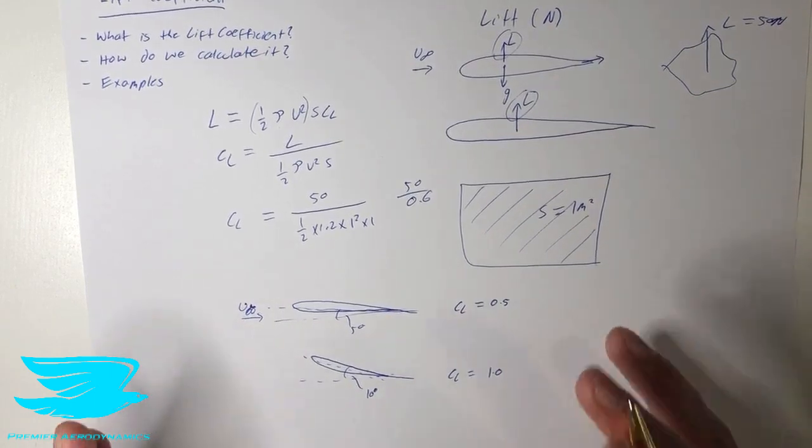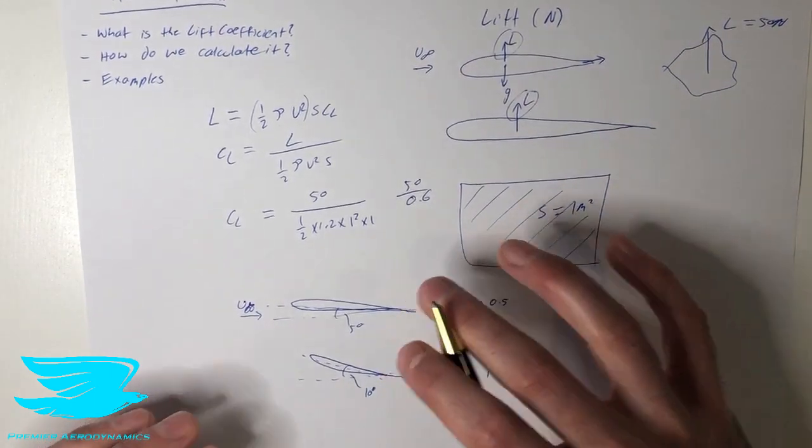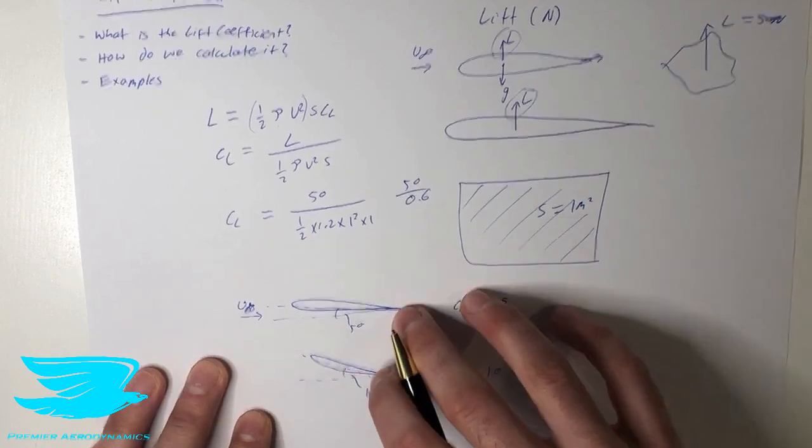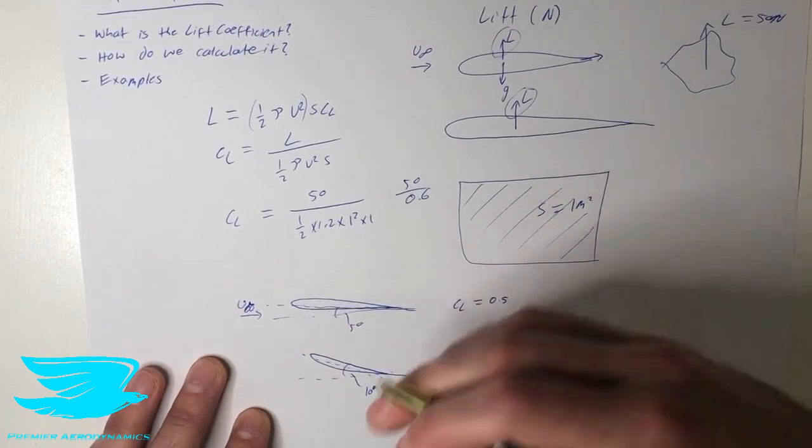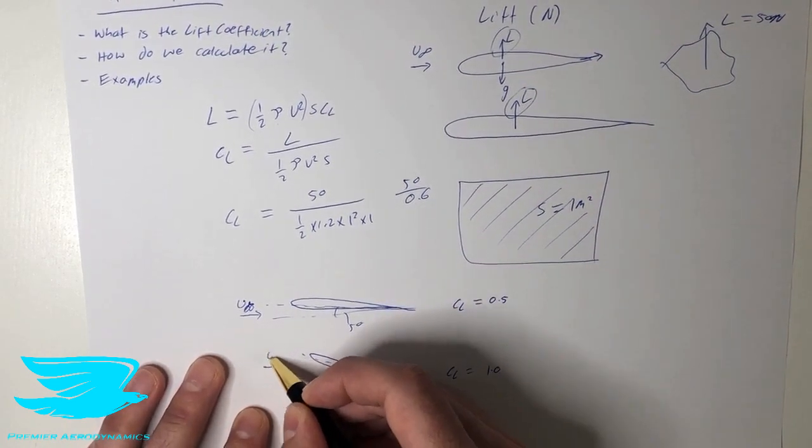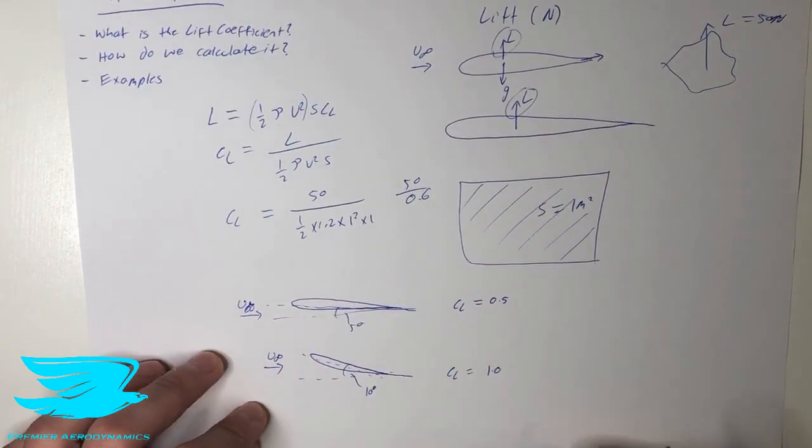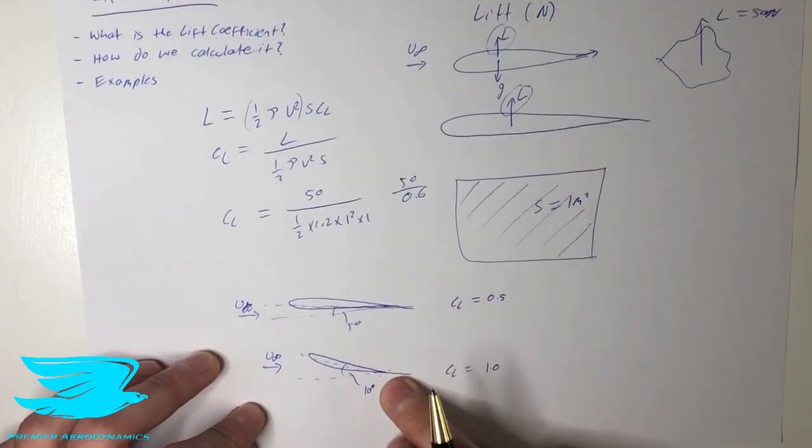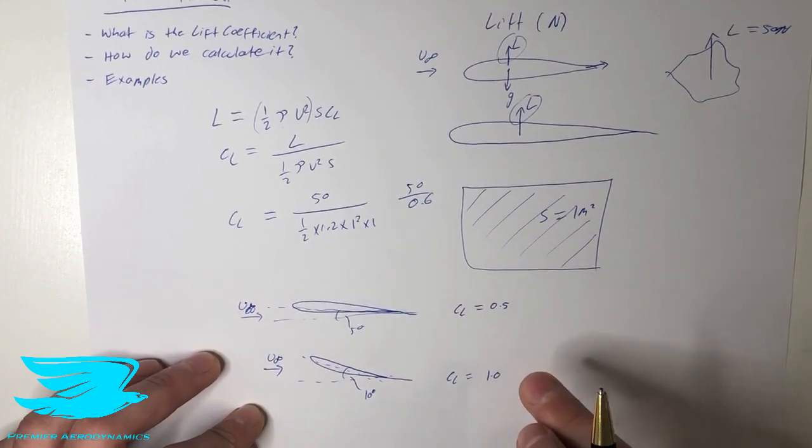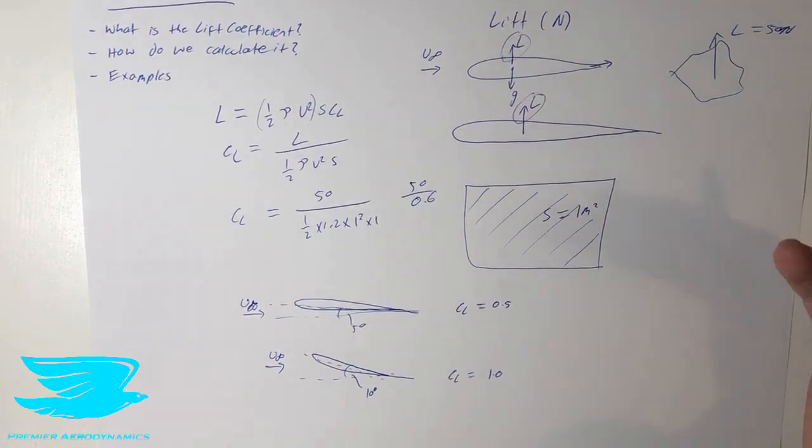So we know now that this object, the lift that it can produce is not only based on the geometry, but also how the geometry is oriented based on the freestream flow. So we can say now, if we have this airfoil at 10 degrees, we have twice the lift coefficient as 5 degrees. And why is this useful?